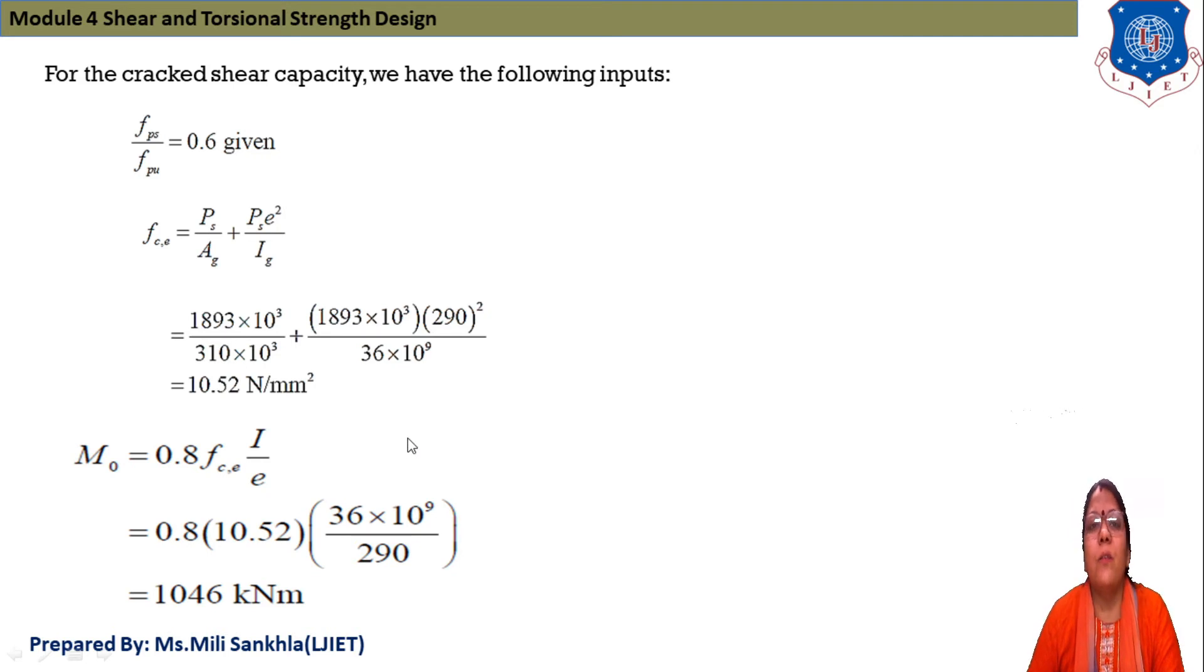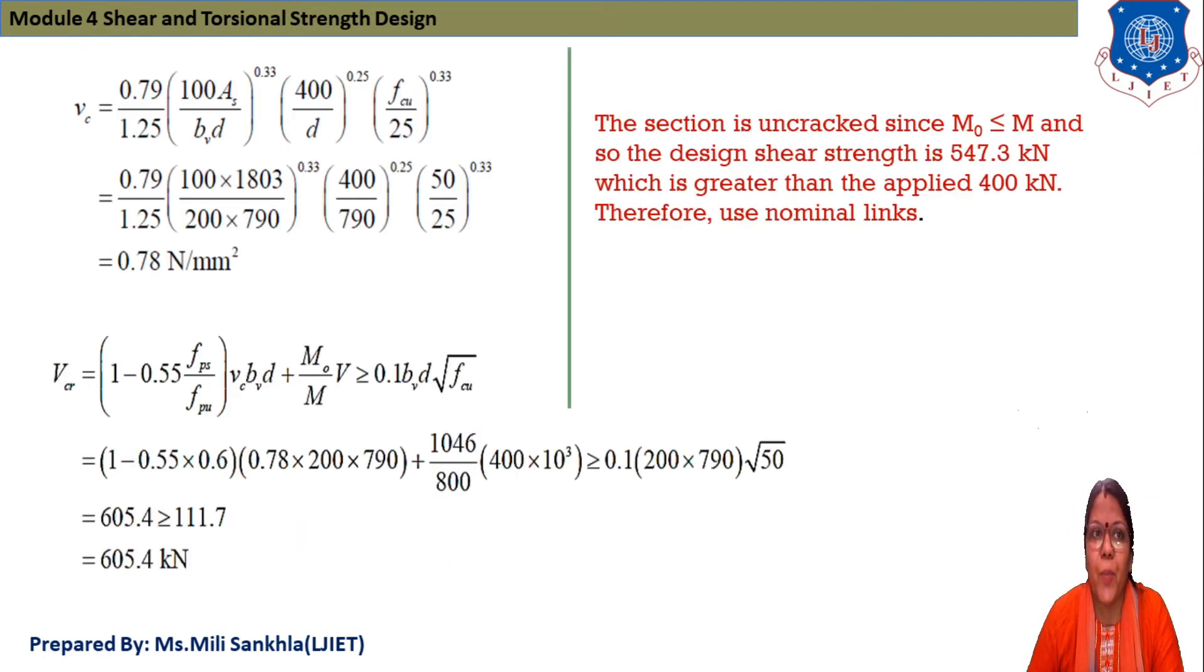Now 1893 is our Ps and gross area 310 × 10². Ps equals 1893 × e and e is given in data 290² divided by Ig and answer equals 10.52 N/mm². M₀ equals 0.8fce·I/e. 0.8 × fce 10.52 and I divided by e, M₀ equals 1046 kN·m. Simply we have to follow the equation that we already learned.